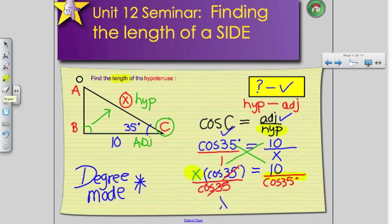So can someone tell me what x is equal to? What is x equal to? What's 10 divided by cos-35 on your calculator? Yep. Very good. 12.2 centimeters, whatever they gave us in the beginning. So that's our x value. And you're always going to follow this method when you're trying to solve for the length of a side.